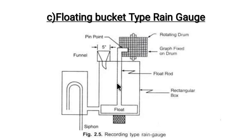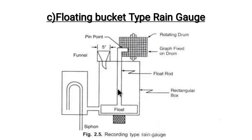The third type is the floating or natural siphon type. The siphon is always in closed condition. If any excess water comes in, the siphon opens and sends the water outside — that is what the siphon unit is used for. When rain falls, water enters through the funnel and causes the floating rod to float. As it rises, the pen arm rotates and draws a graph, from which we can find the intensity of rainfall.